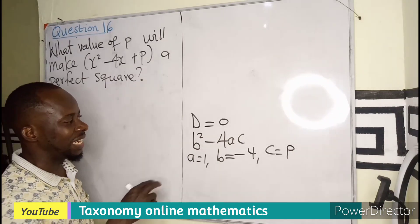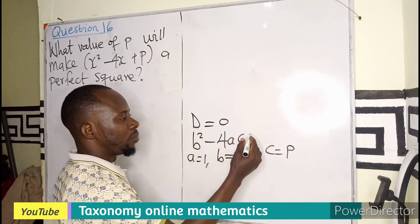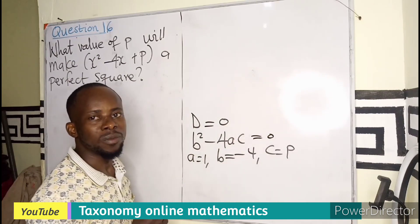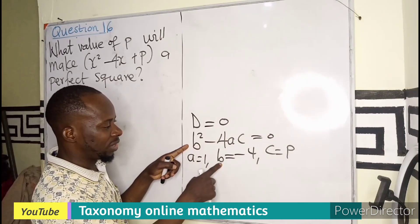So we are saying that the discriminant must be equal to 0, meaning this must be equal to 0. So if I'm taking this as b, which is this,